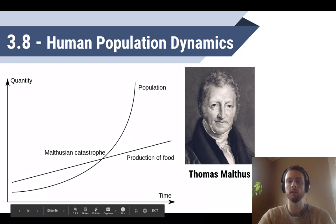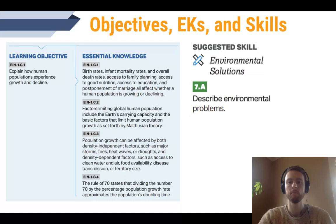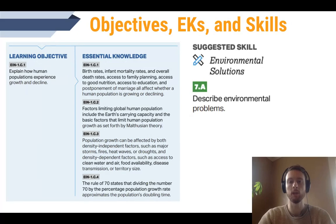What we'll talk about throughout this video are the factors that Malthus didn't account for, such as technological advancement that would alter food supply. Our objective for today is to be able to explain how human populations experience growth and decline. We need to know about all the factors that increase and decrease human populations, primarily birth rates and death rates. We also need to know global limits to human population, primarily arable or farmable land limits. Finally, we'll learn a simple formula called the rule of 70, which can be used to predict how long it takes a population to double in size. Our suggested science skill for the day is describing environmental problems.